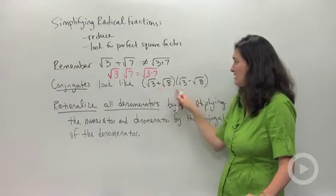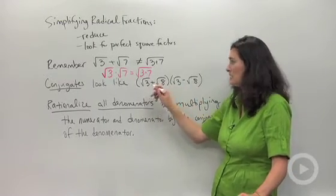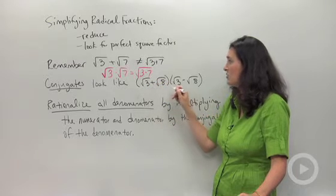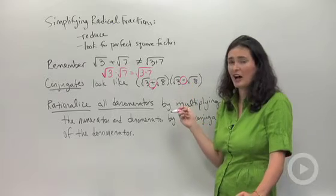Conjugates look like this. They're two different sums and differences that have the same two terms. Like I have root 3 plus root 8 and root 3 minus root 8. These are called conjugates.